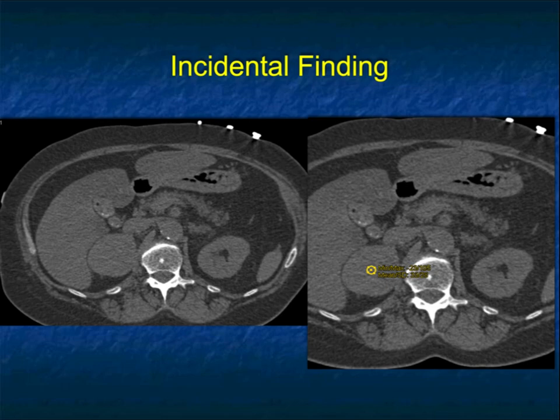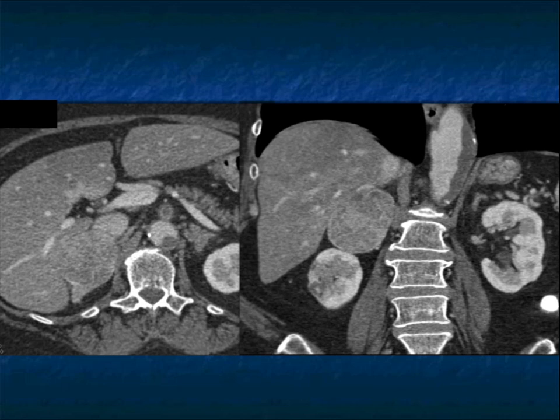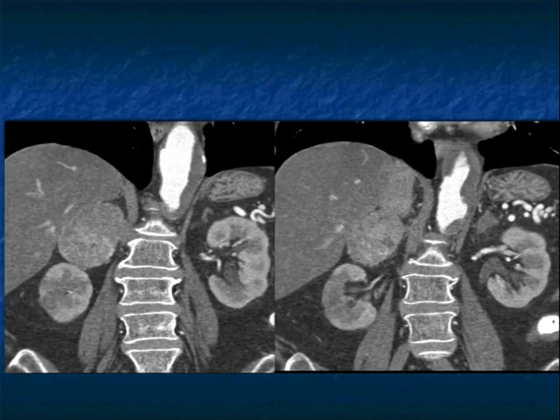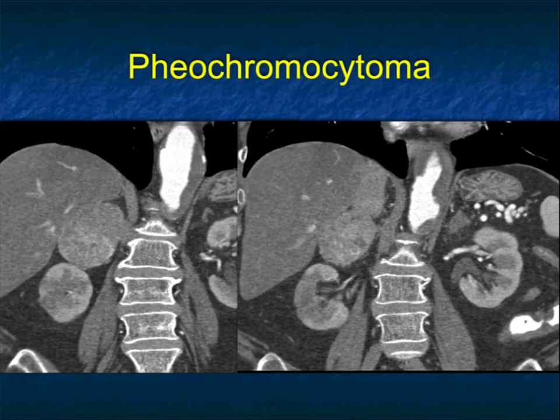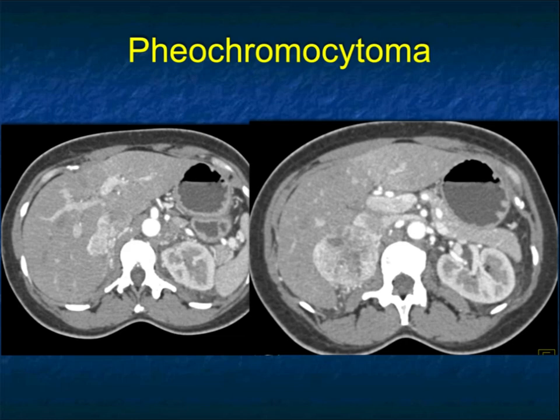Another incidental finding — a right adrenal solid, smooth mass. It enhances on arterial and venous phase imaging, but not all that much. It's not as vascular as some of the lesions shown, but it is somewhat vascular. Lab values are important to get. This was also a pheochromocytoma. So I've now shown you very vascular lesions, lesions that are somewhat cystic, and lesions that are not very vascular — there's really a range.